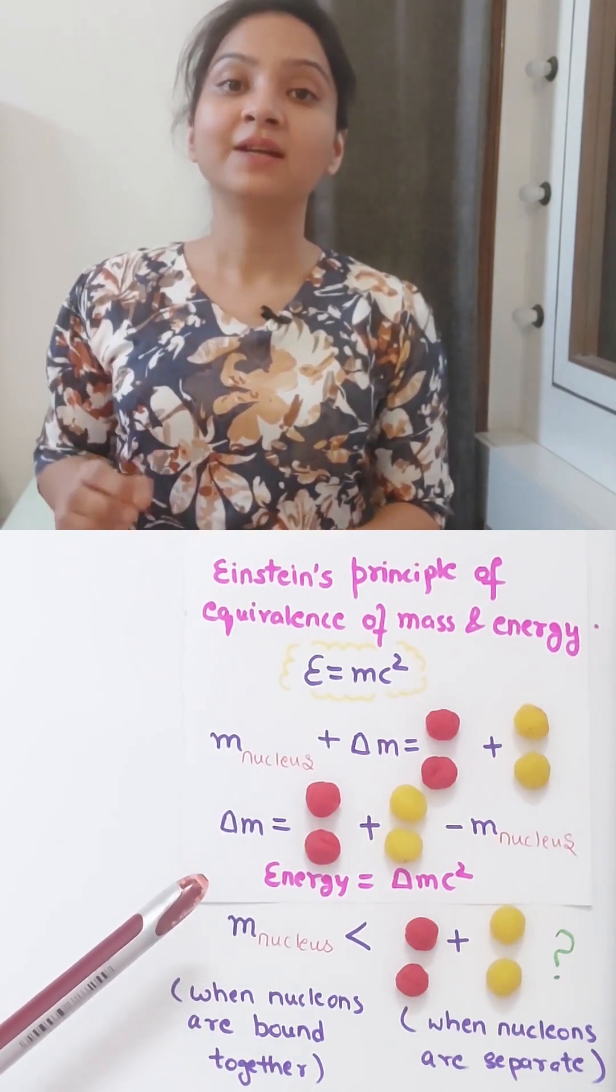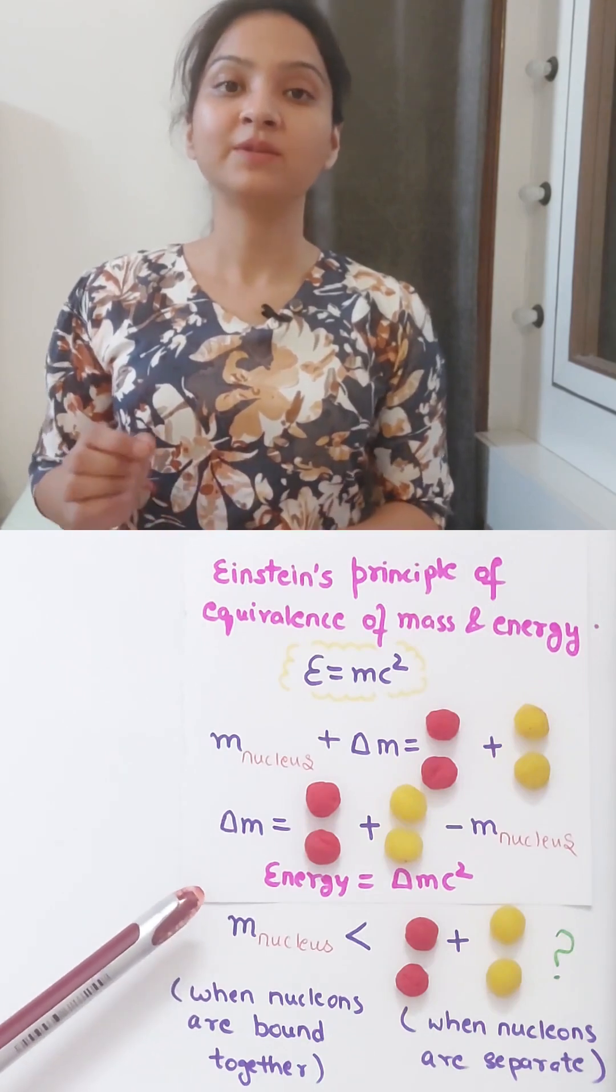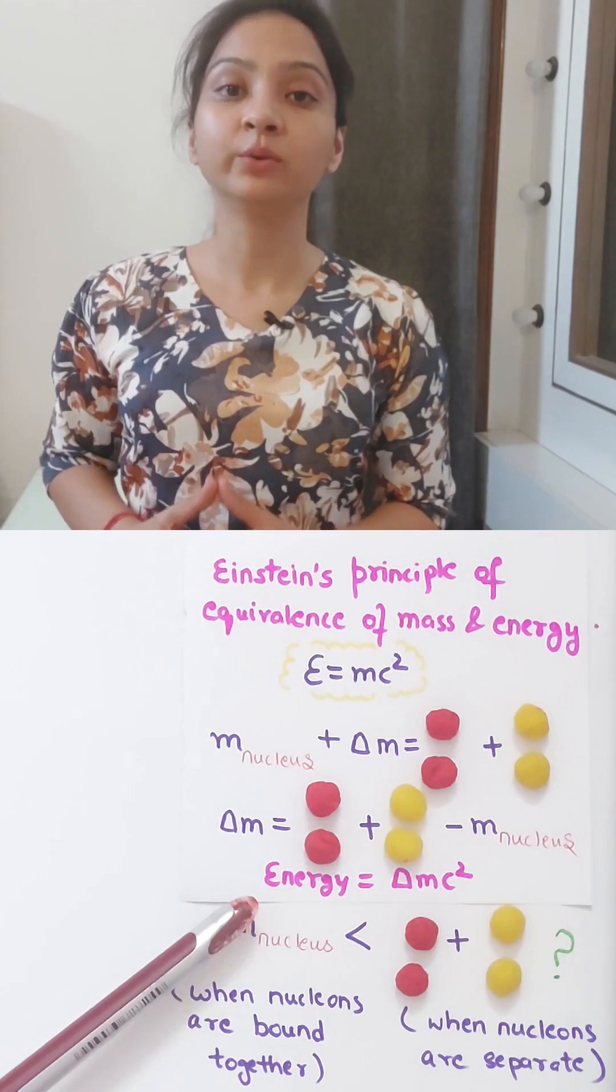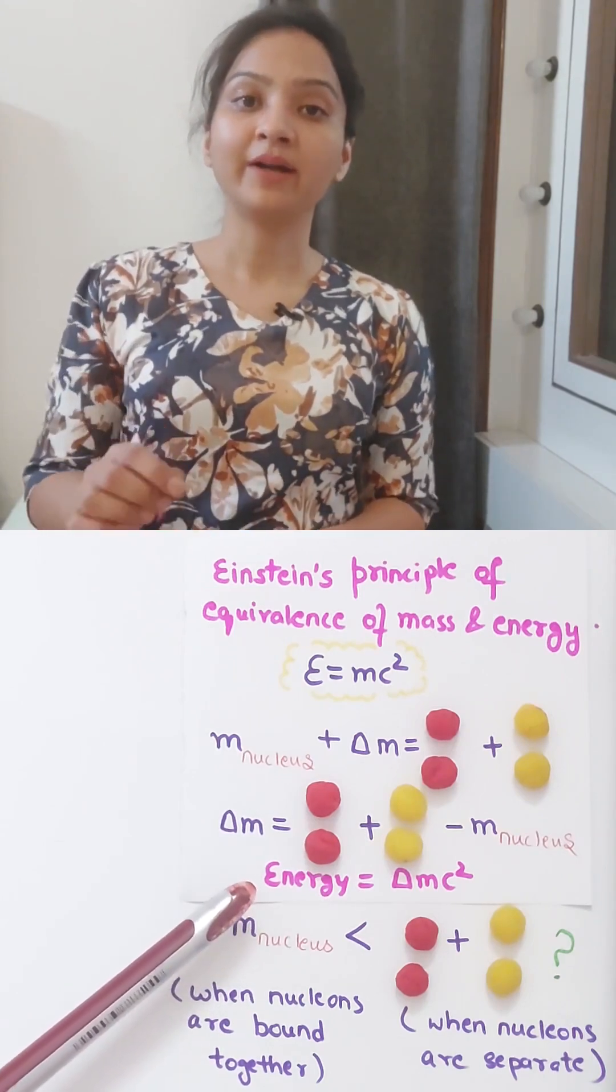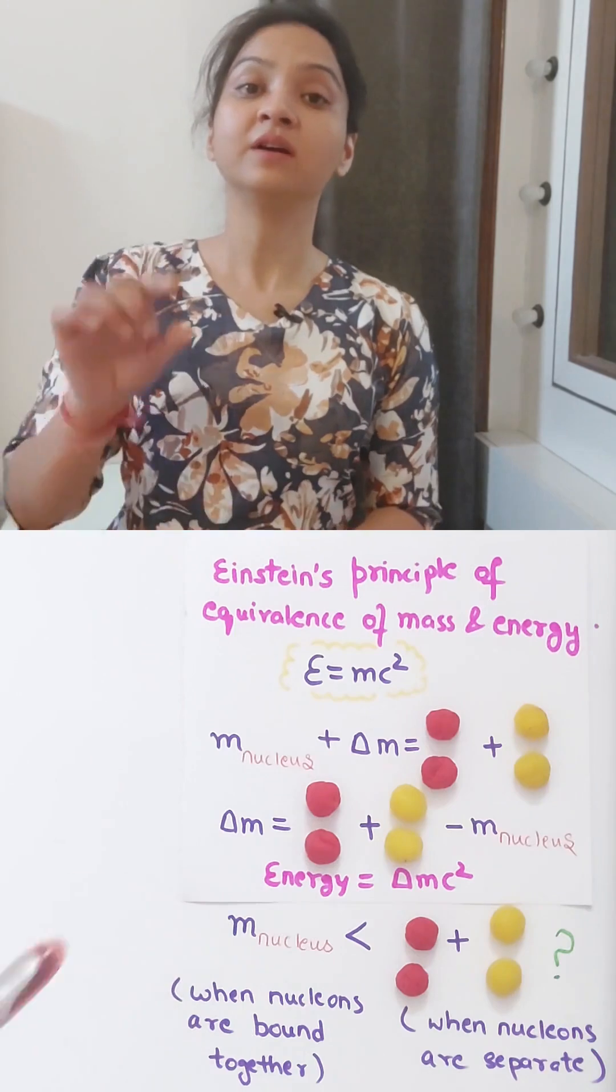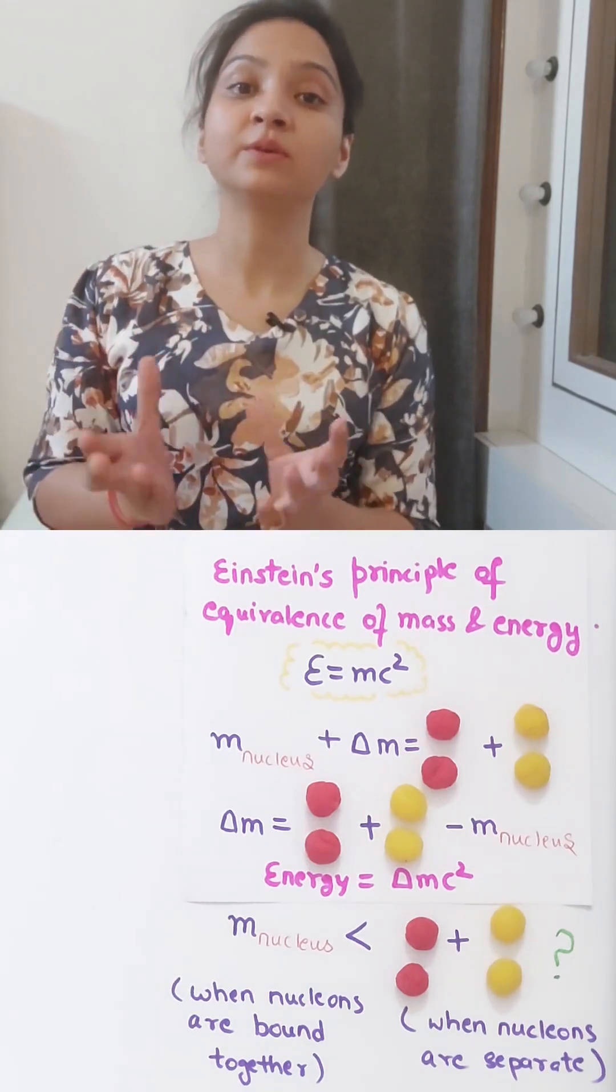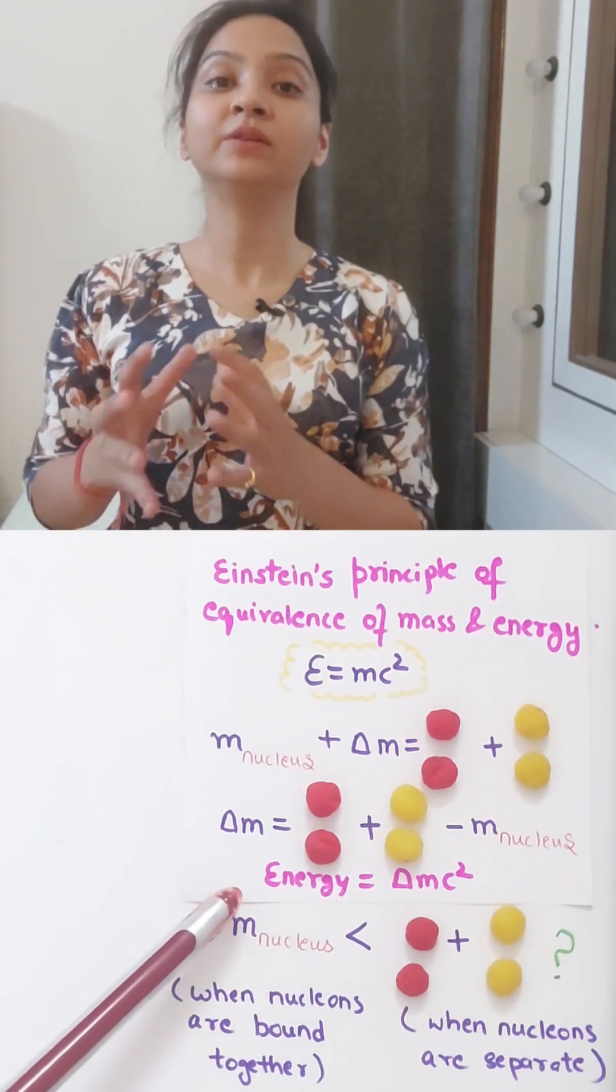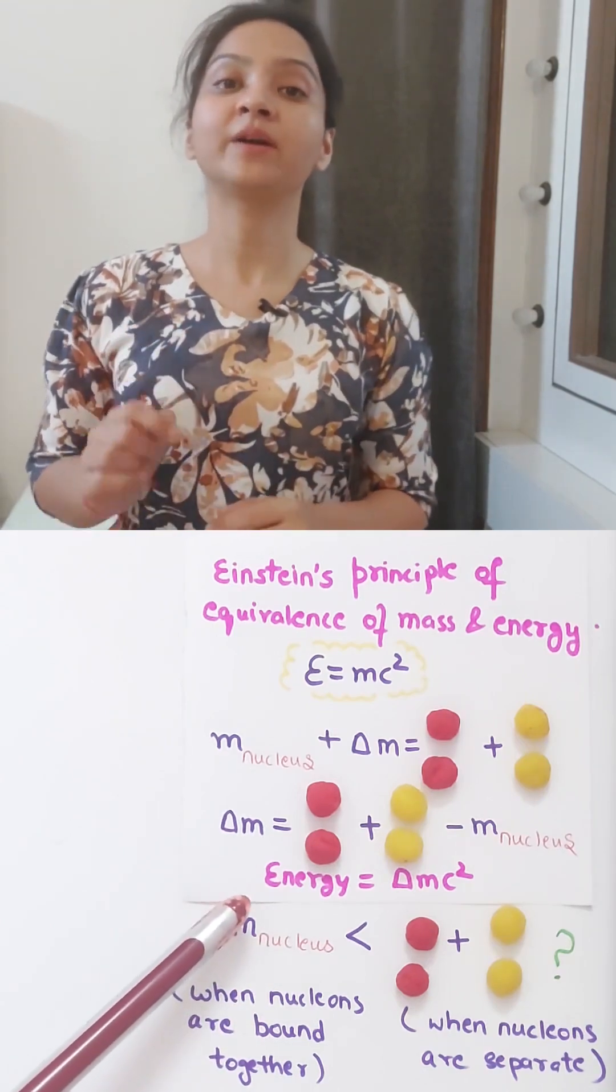Which means that an amount of energy equal to the mass defect must be supplied in order to separate the nucleus into individual nucleons. Or you can say that the binding energy is the energy released when a nucleus is formed from those nucleons, or the energy required to keep the nucleons together is provided by the mass defect.